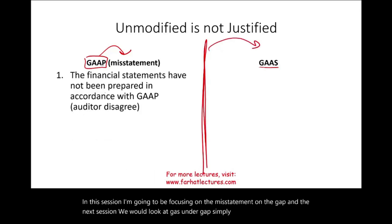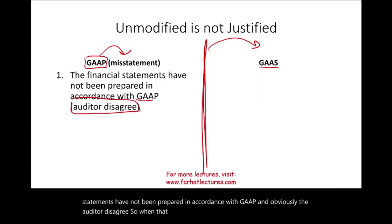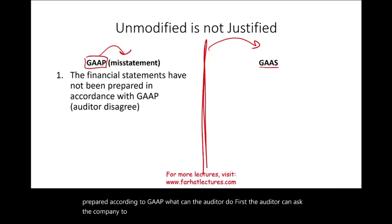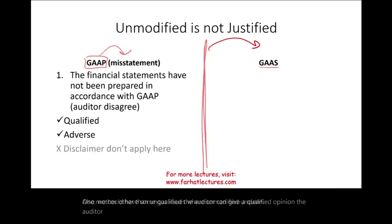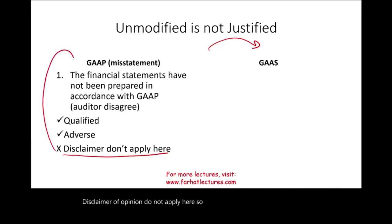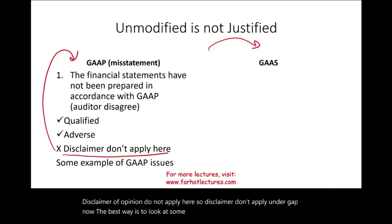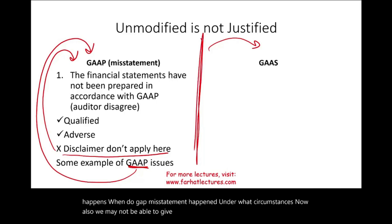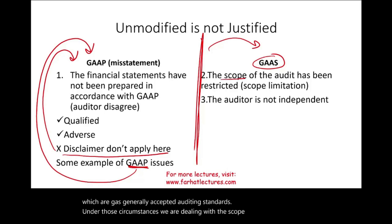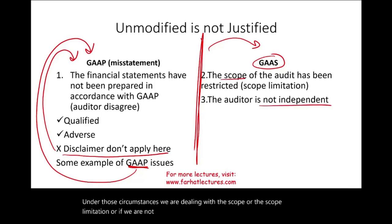Under GAAP, the financial statements have not been prepared in accordance with GAAP and the auditor disagrees. When that happens, the auditor can first ask the company to make changes. If they don't change, there are two options — not unmodified. The auditor can give a qualified opinion or an adverse opinion. A disclaimer of opinion does not apply here; disclaimer doesn't apply under GAAP. Under GAAS — generally accepted auditing standards — we deal with scope limitations or independence issues, which we will discuss in the next session.